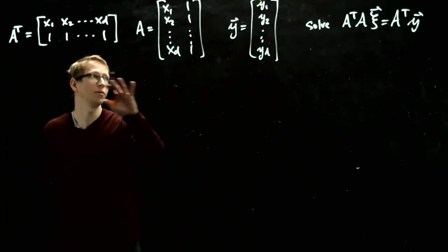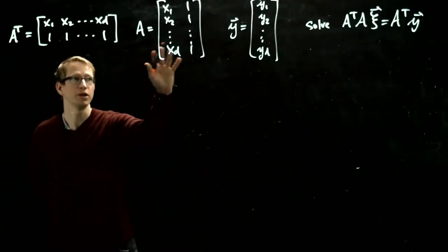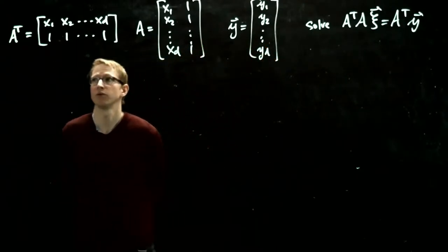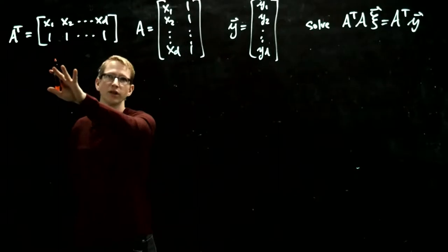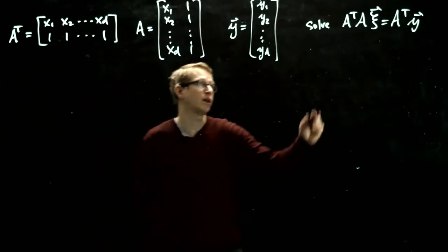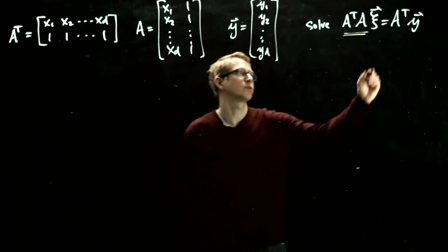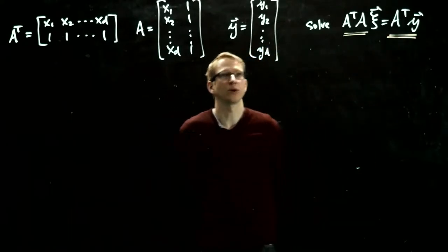I've written the problem set up. We have the matrix A with our data points for x and our vector y with y. I've taken the transpose and written it on the left because we'll be applying matrix multiplication to this side to solve for A transpose A, and then we'll also matrix multiply A transpose with y.